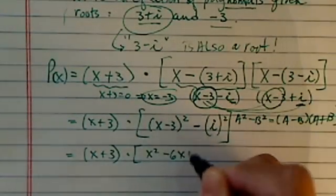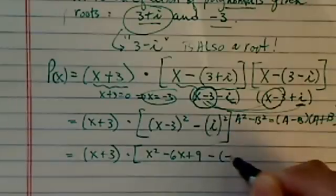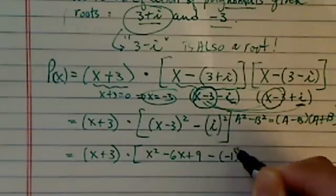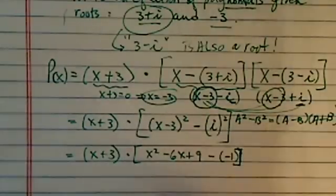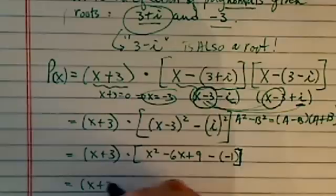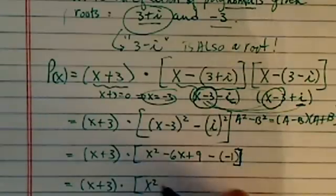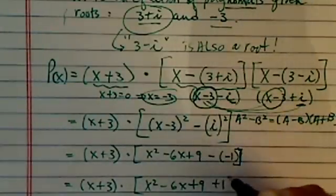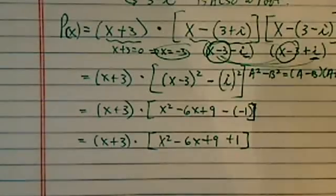I have x squared minus 6x plus 9 minus, I always have my students write it up. i squared is minus 1. Just do yourself a favor and write one more step so you don't miss a necessary sign change over here.